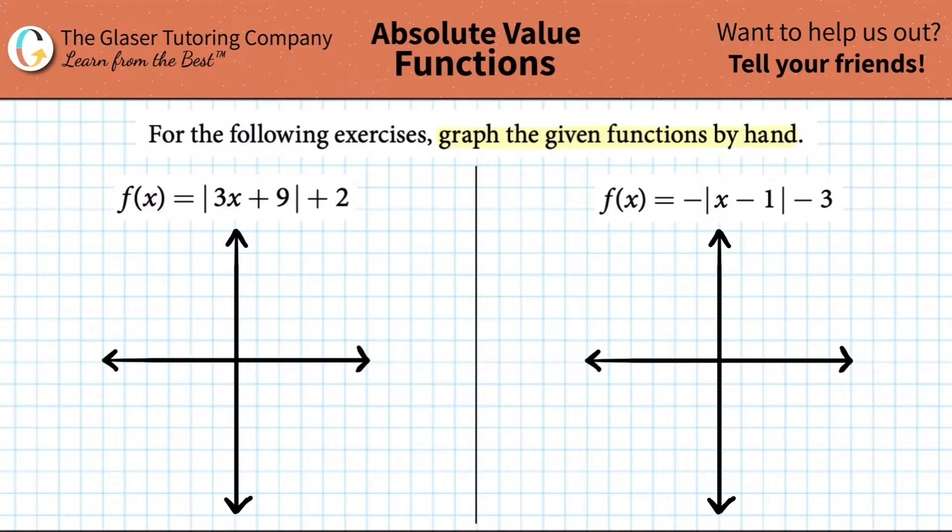So the first one, we have f of x equals the absolute value of 3x plus 9 plus 2. The first thing that we have to know is we have to memorize what the default graph is, the most simplest graph. I see that I have an absolute value here. So the most simplest graph for an absolute value is f of x equals just the absolute value of x. Or remember that the f of x is actually y. They mean the same thing. And the graph looks like this.